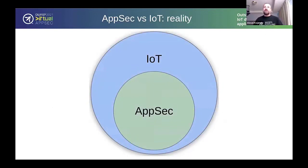The proper Venn diagram should look like this, at least from the attacker's perspective. Think about it: if you're an attacker and you want to attack a device, you can do it through many different vectors, and one of them happens to be the software that runs on the device.